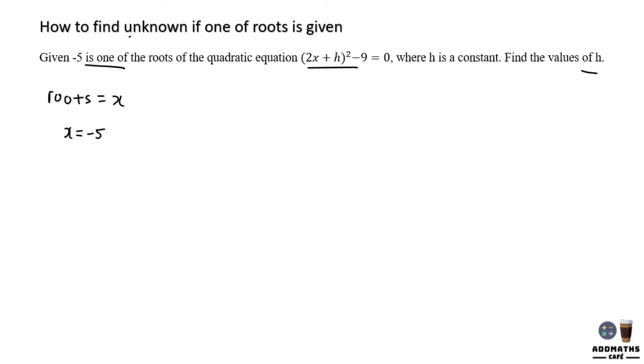When there are two unknowns, you must use simultaneous equations like what I say in chapter 1. But in this case, your x is equal to negative 5, you can straight away substitute your x into the equation and find the h answer.